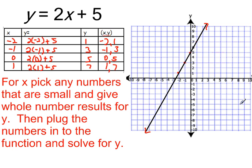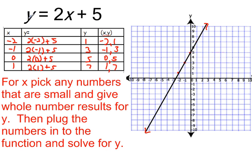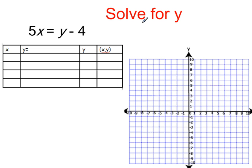Let's take a look here and let's do another one. For this one, we don't have y equals. We have 5x equals y minus 4. The difference here is, in this one we had y equals. Well, we have to put this into y equals form. So we have to solve for y. So we're going to take our function, 5x equals y minus 4.